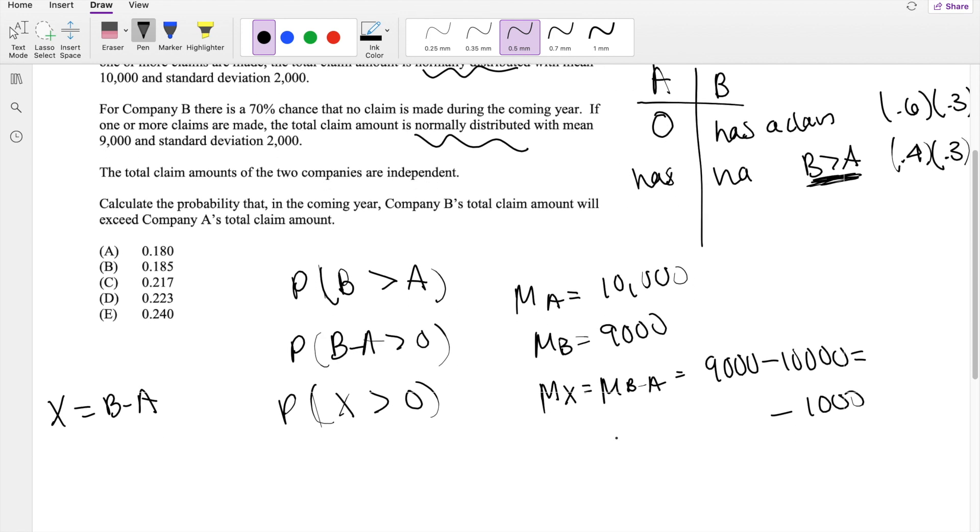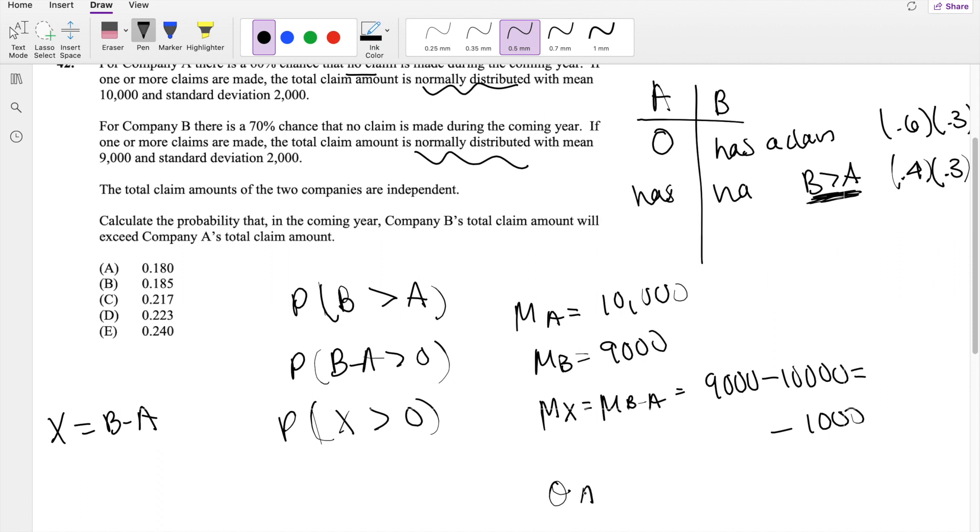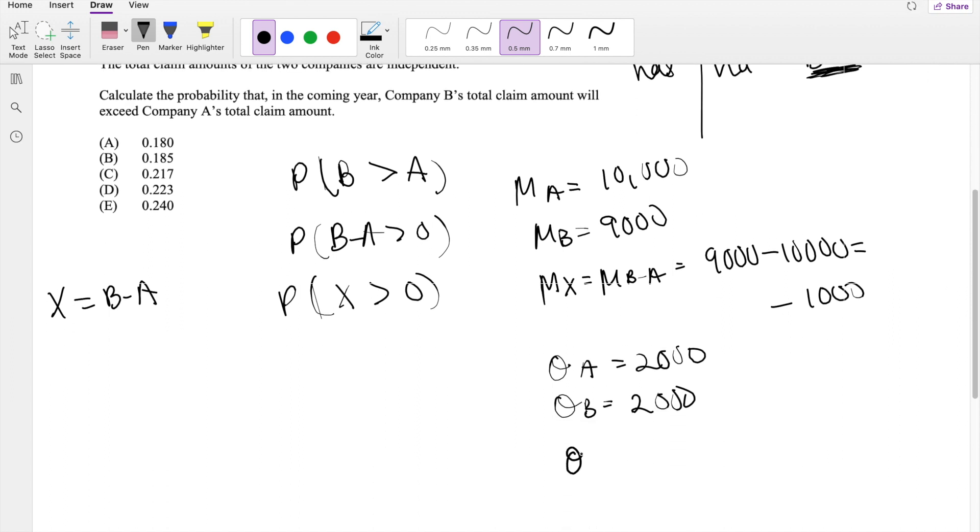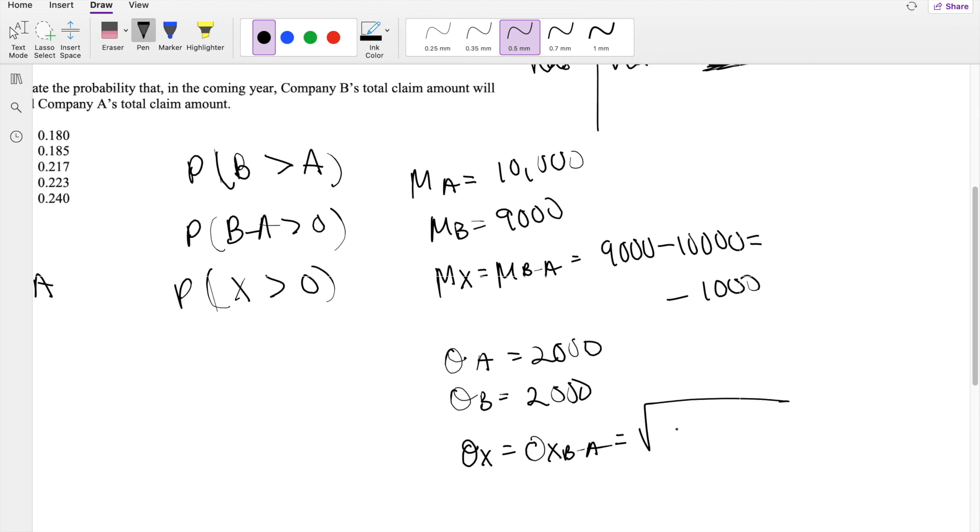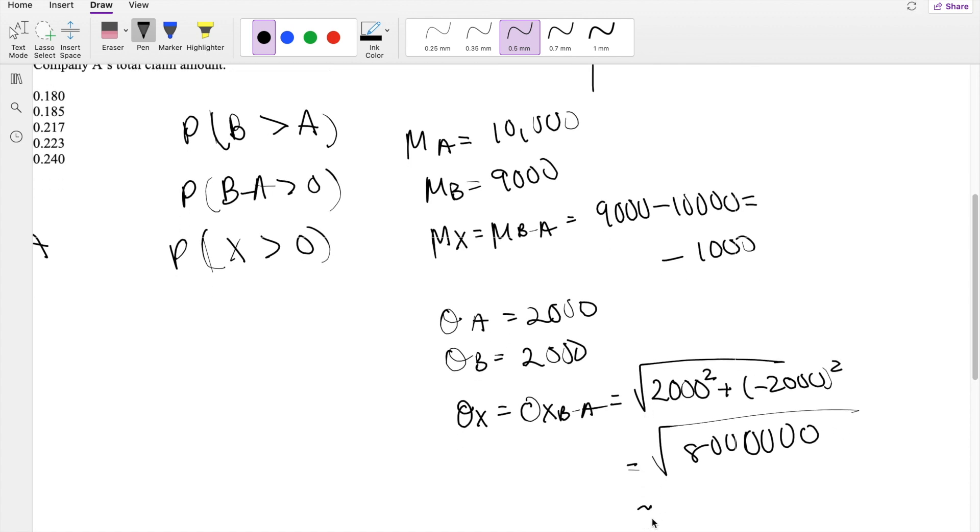Then we need the standard deviation. Standard deviation of A is equal to 2,000. Standard deviation of B is equal to 2,000 as well. And then what is the standard deviation of X, which is standard deviation of B minus A? We have to make sure we put it under our square root, and it's basically like 2,000 squared plus negative 2,000 squared. We have to put it back in variance form, which is equal to square root of 8 million, which is approximately equal to 2828.427.